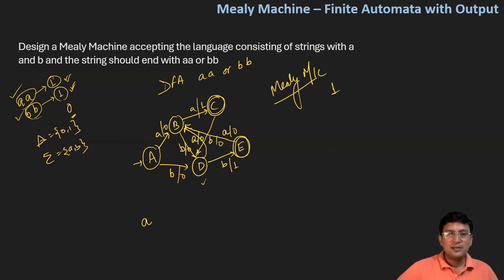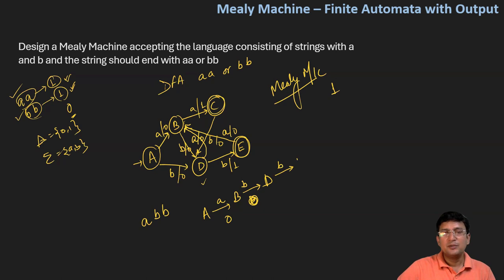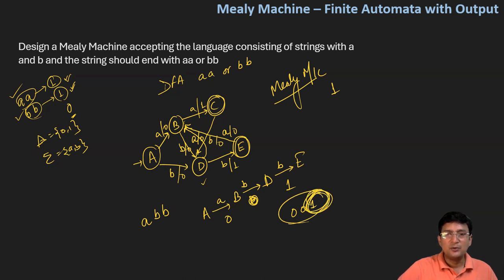Let's take the example of input ABB. Starting at state A with symbol A, we move to state B and produce output zero. At state B with input symbol B, we move to state D and produce output zero. Then at state D, by getting symbol B, we move to state E and produce output one. So the output produced is 0, 0, 1 — and the last digit being one indicates that the string is ending with BB.